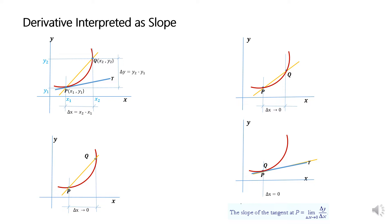The slope of the tangent line at P is equal to the limit of change in y over change in x as change in x approaches 0. That slope and that limit will be the value of what we call the derivative.